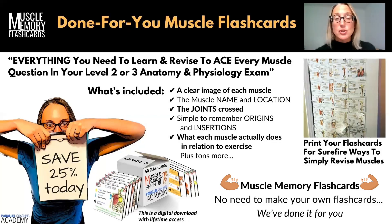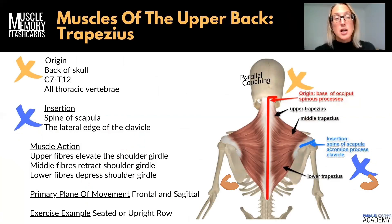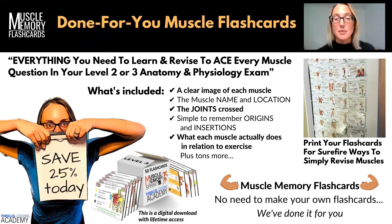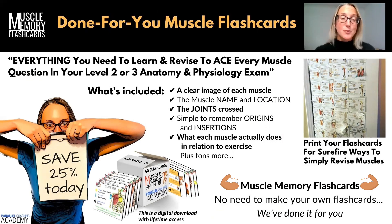Each flashcard includes a clear image of the muscle, the muscle name and location, the joints that are crossed, simple-to-remember origins and insertions, and what each muscle does in relation to exercise. This is mapped to whether you're doing Level 2 or Level 3 — the trapezius flashcard you saw was the Level 3 version, whereas the Level 2 one doesn't include primary plane of movement and has a more simplified origin and insertion. We make that really clear so you can stack up information relevant to your exam. Some people print their flashcards and stick them on the kitchen or office walls — some even put them on the back of the toilet door — so they're always there for repetition.